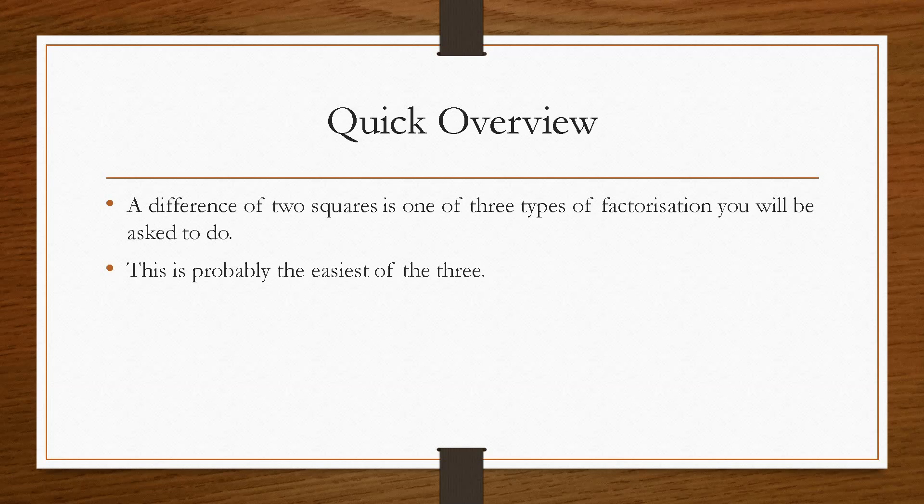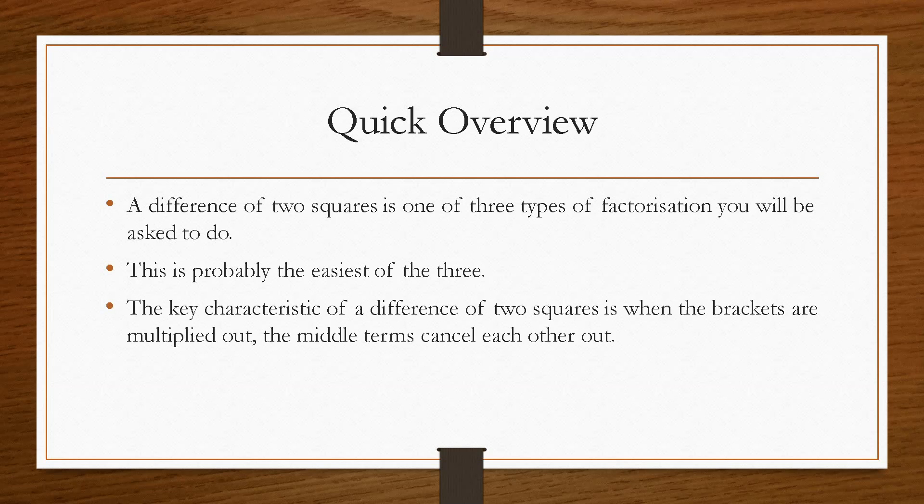This is probably the easiest of the three and you will see why when we do an example. And the key characteristic of a difference of two squares is that when the brackets are multiplied out, the middle terms will cancel each other out and instead of being left with three terms, you'll be left with two. So this is what distinguishes a difference of two squares between a trinomial.